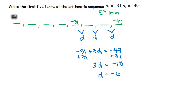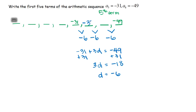If this still doesn't make sense, let me show you: since D is negative 6, that means we subtract 6 here, here, and here. So negative 31 minus 6 is negative 37, negative 37 minus 6 is negative 43, and negative 43 minus 6 is negative 49. Yay!